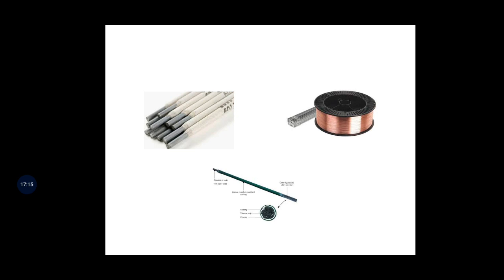A bare electrode is simply a core wire — a copper wire that is continuously fed. It is uncoated with flux, so it does not prevent oxidation of the weld, and hence the joint obtained is weak. Welding processes that use bare electrodes utilize inert gases for shielding of the welded metal.